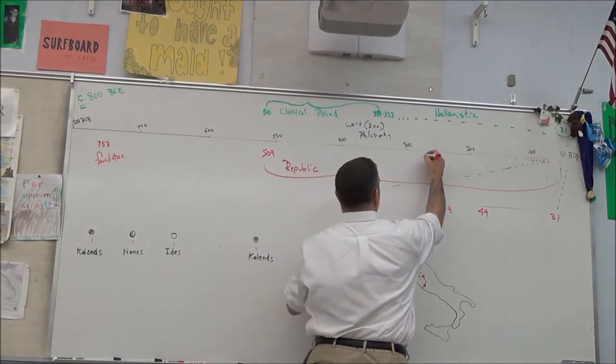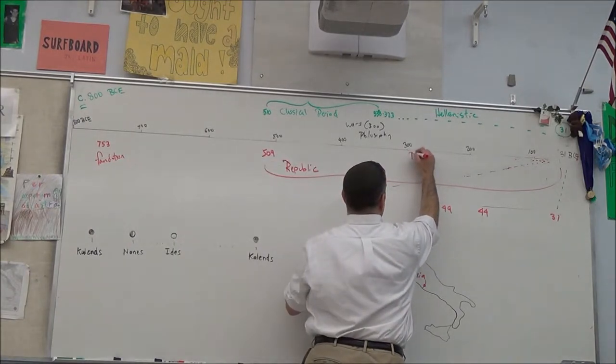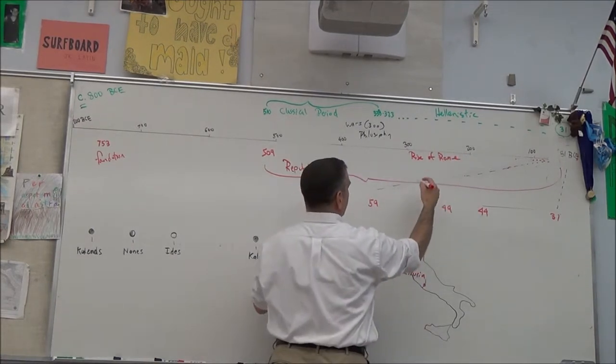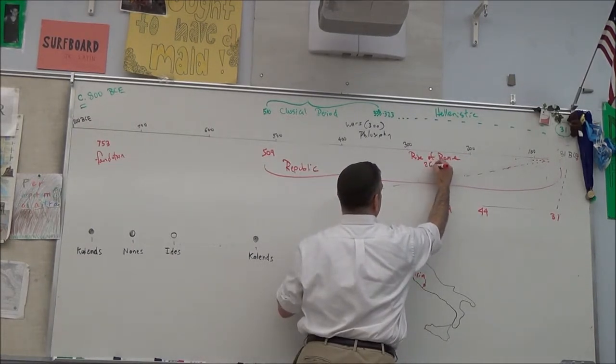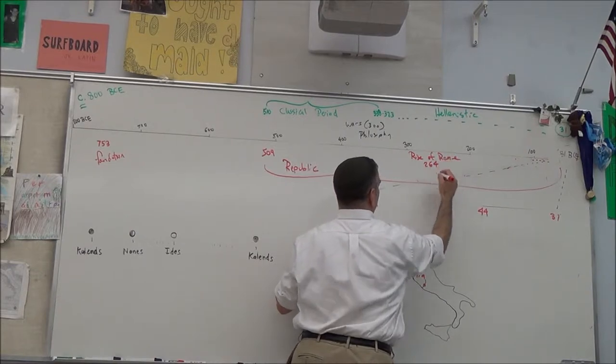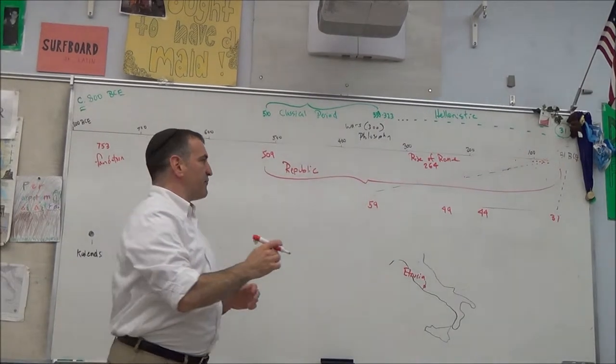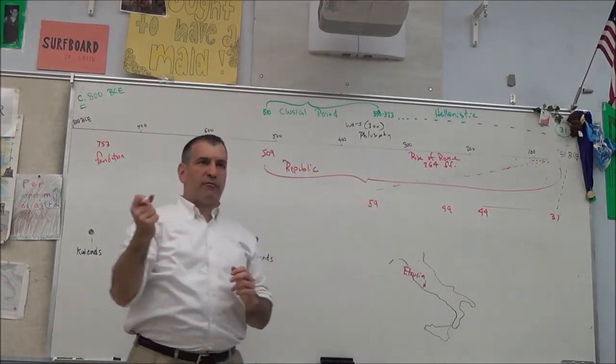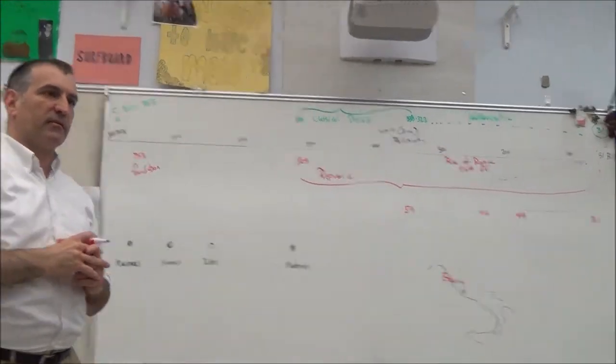But she becomes much more powerful. We can say the rise of Rome after 300, and a nice date is 264, which is the first of the three Punic Wars. So after 264, Rome becomes a very powerful force in the Mediterranean.